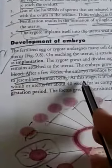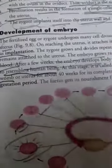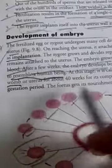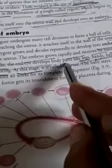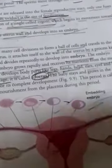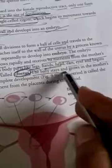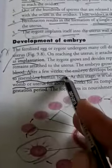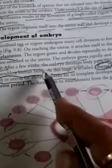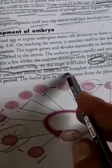After a few weeks the body parts are developed and it resembles a human being. At this stage it is called the fetus. When it shows all body parts it is known as the fetus. The baby stays and grows in the mother's womb or uterus for about 40 weeks for its complete development.